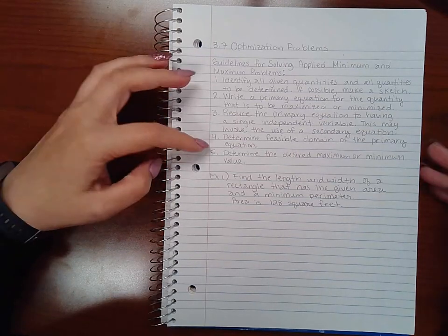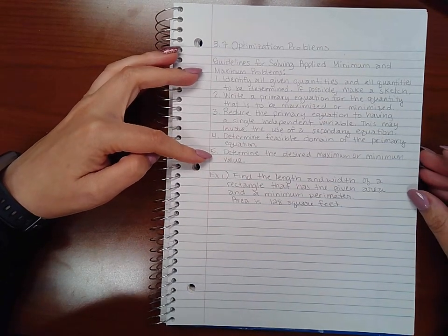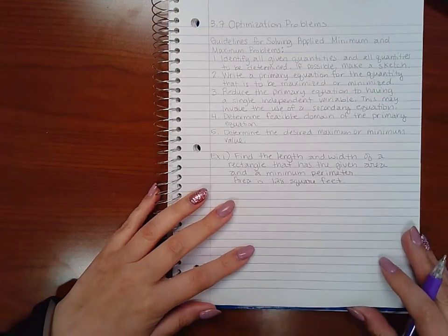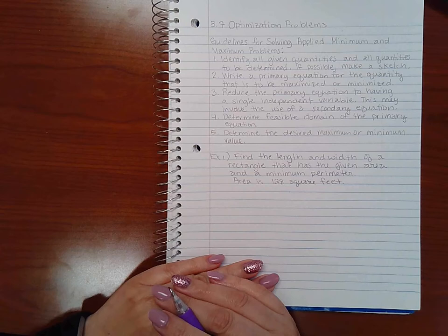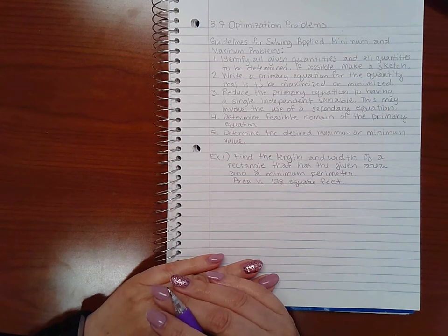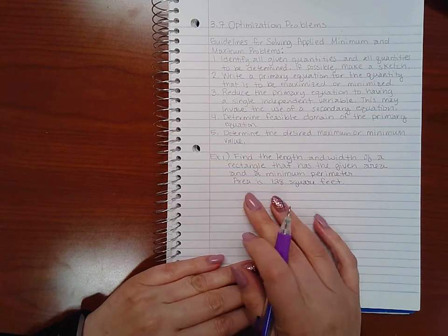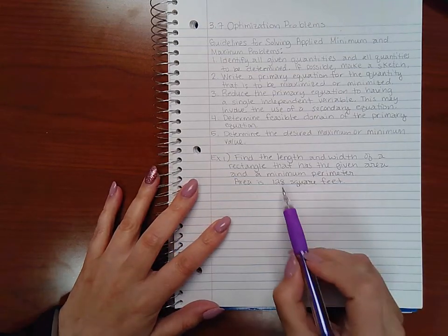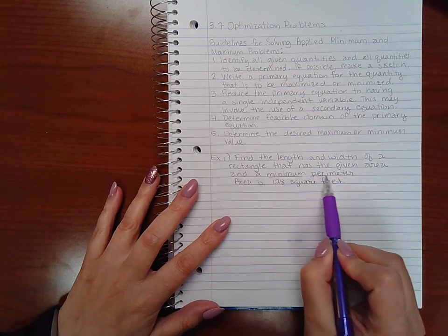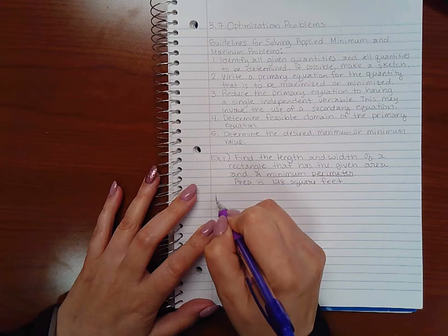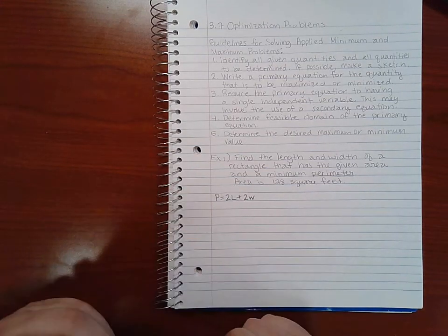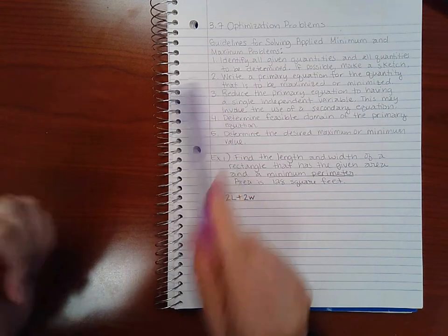Number five, determine the desired maximum or minimum value. So here's example one: Find the length and width of a rectangle that has the given area and a minimum perimeter. The area would be 128 square feet. So it does say find a minimum perimeter, so it's my perimeter equation that I want to minimize. Remember that is one of the key things that I need to do.